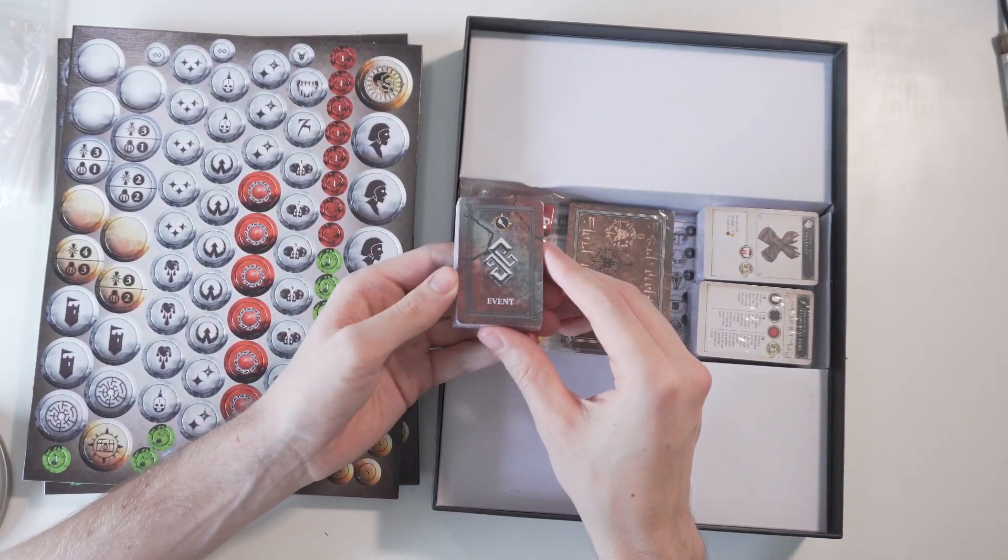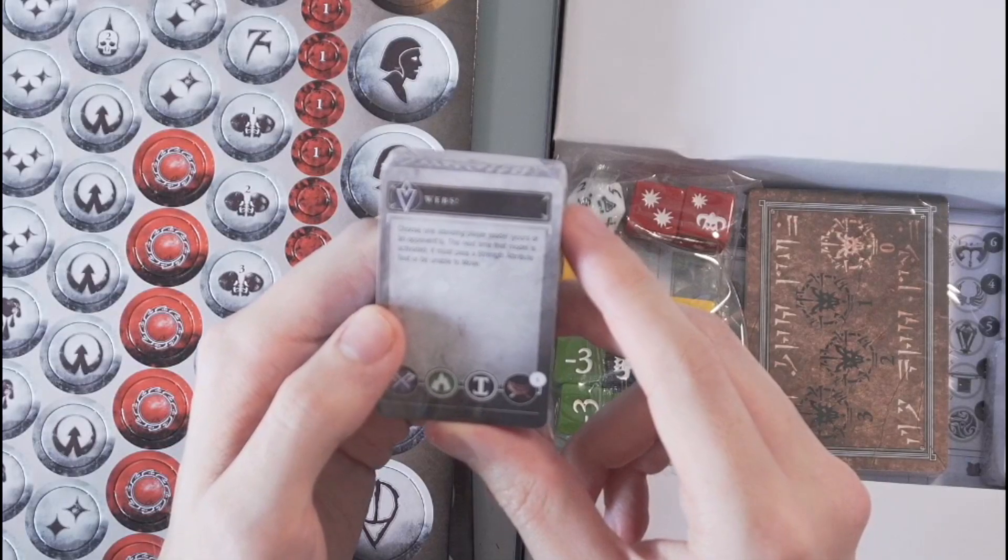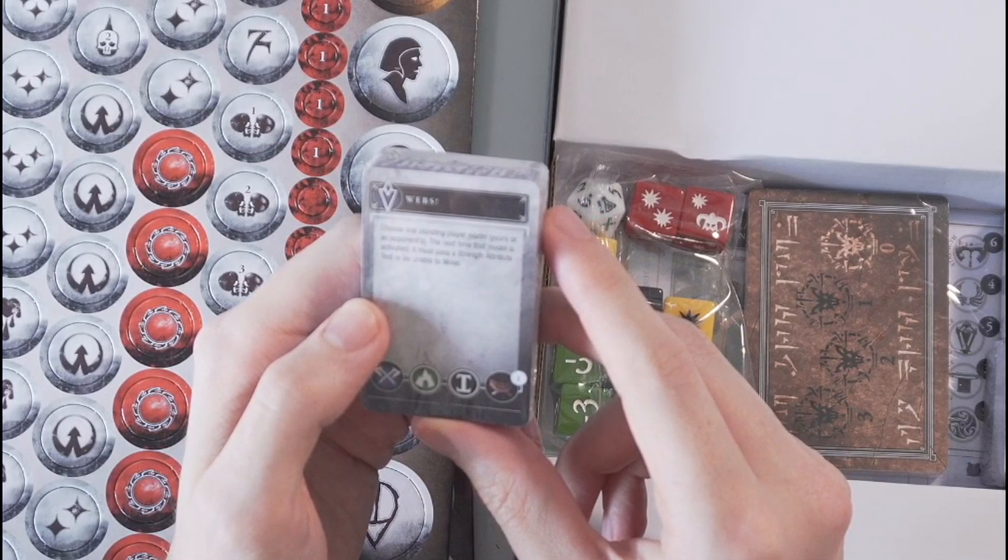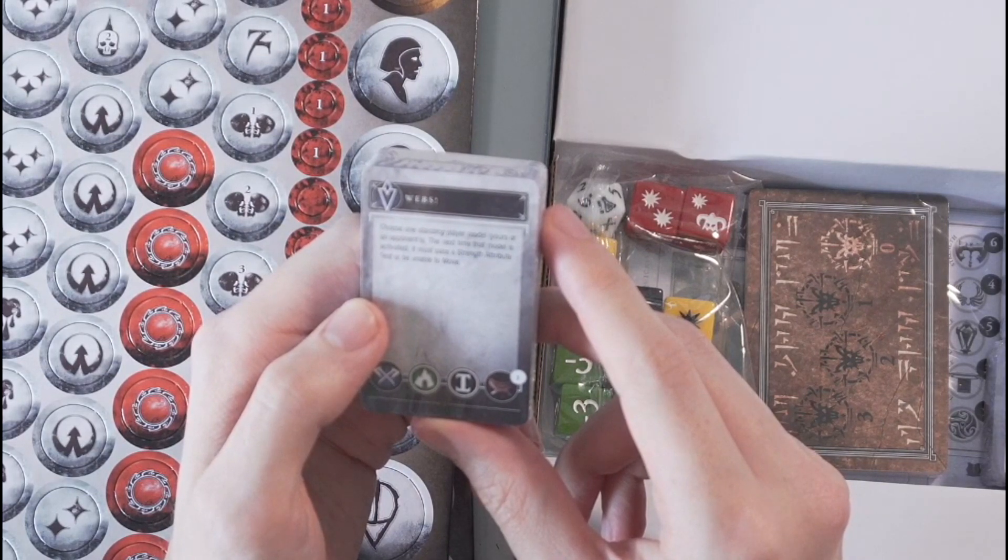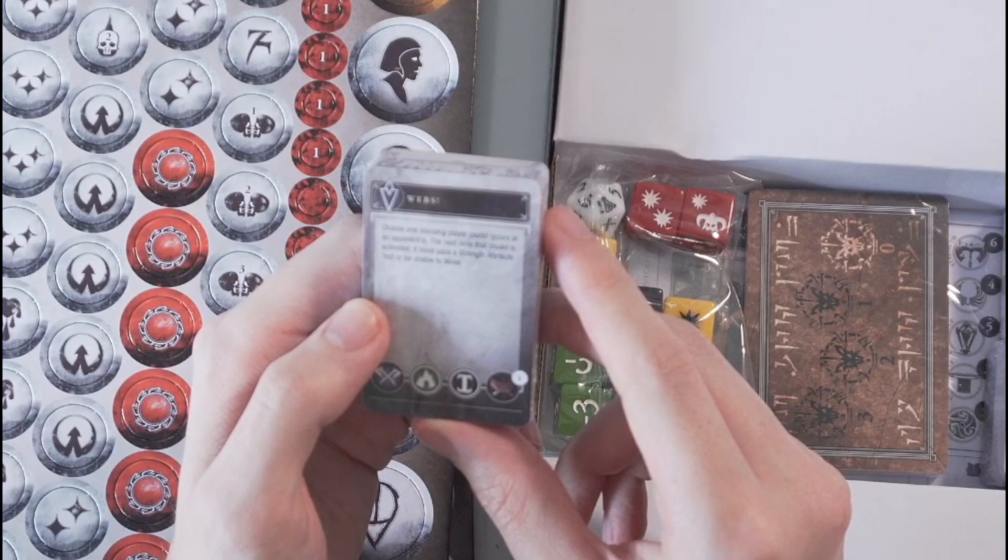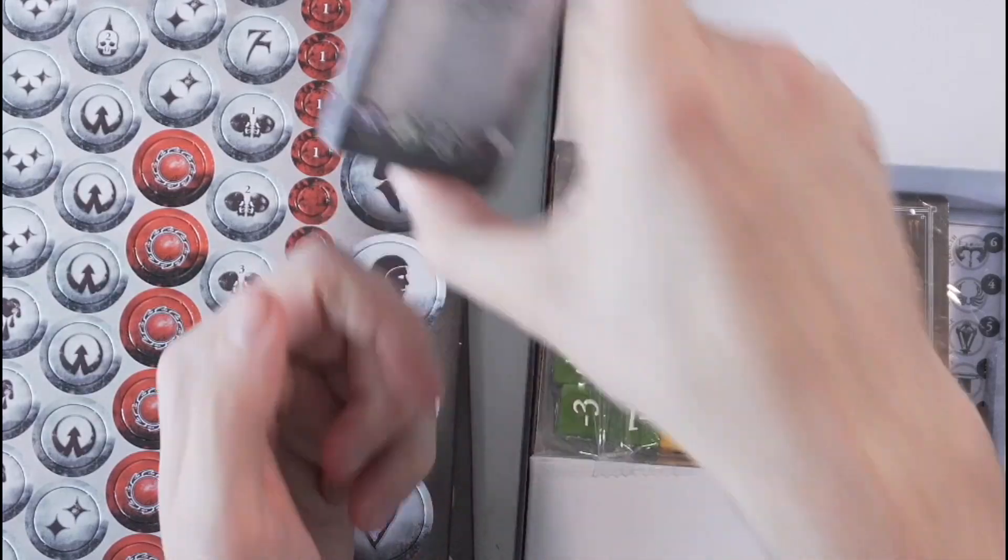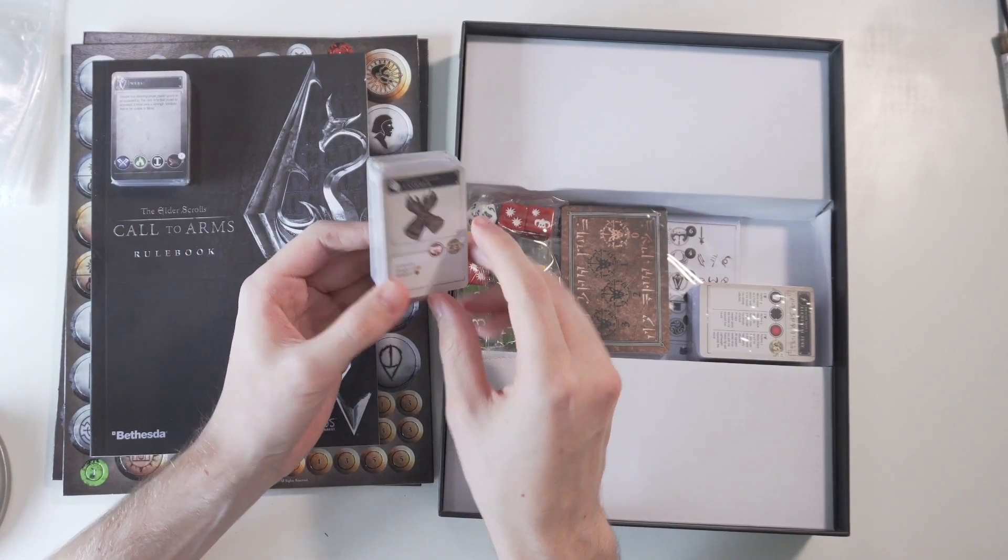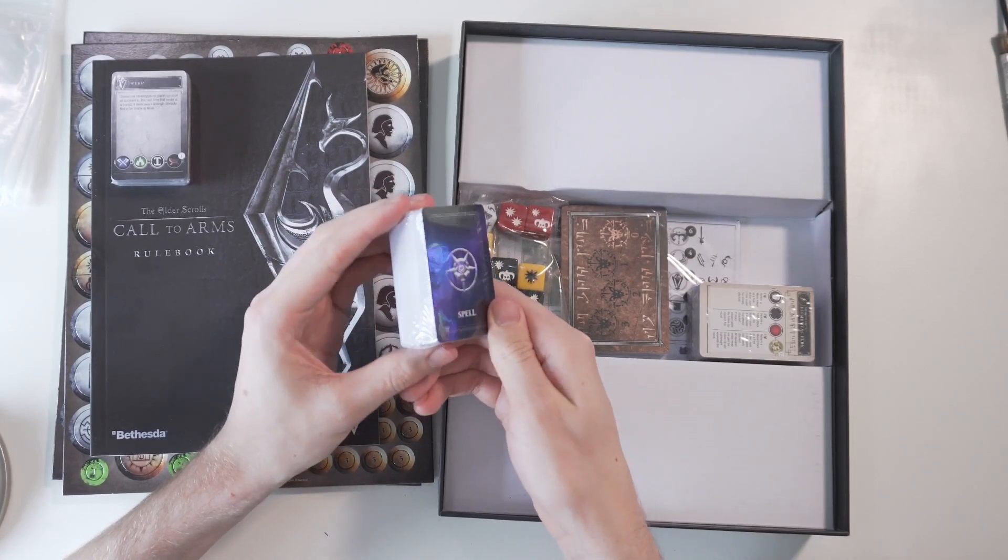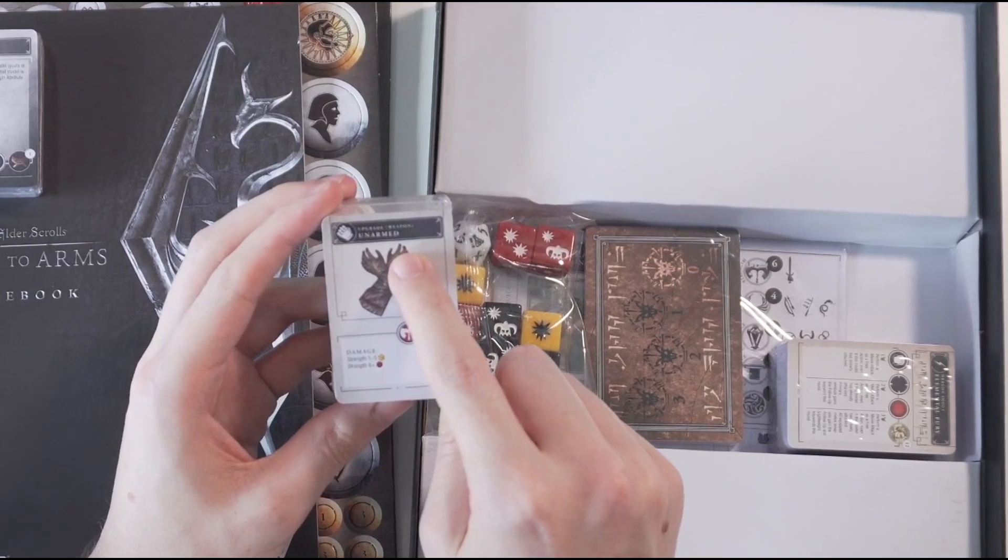And these are the cards. So this is an event card. Choose one standing player model, yours or your opponents. The next time that model is activated, it must pass a strength attribute test or be unable to move. And that's called webs. I guess that's what happens when you get stuck in the spider webs. And then we have a bunch of item cards. Oh, spell and item cards, I guess, because these are upgraded weapons unarmed.